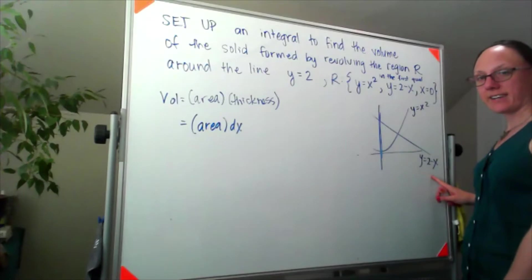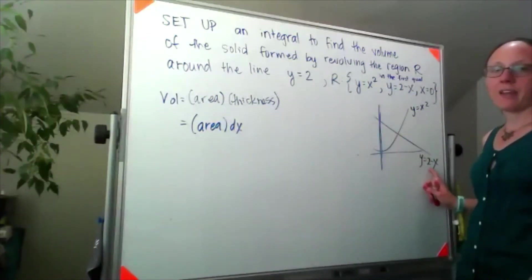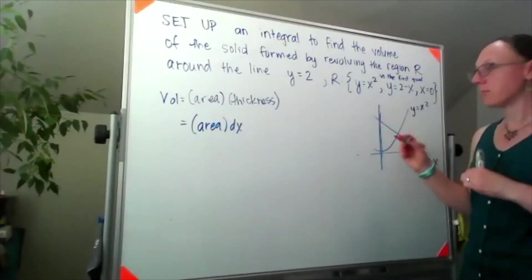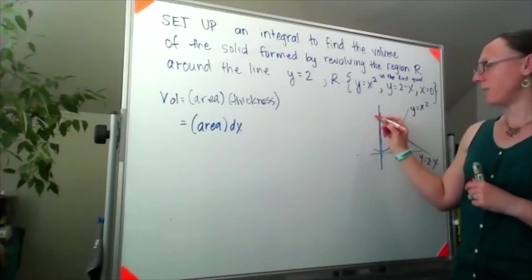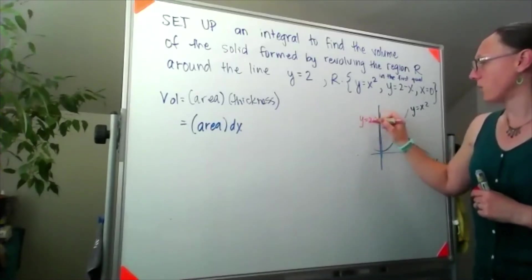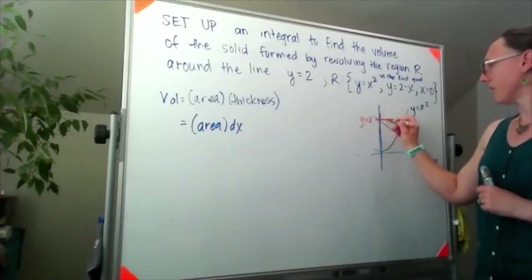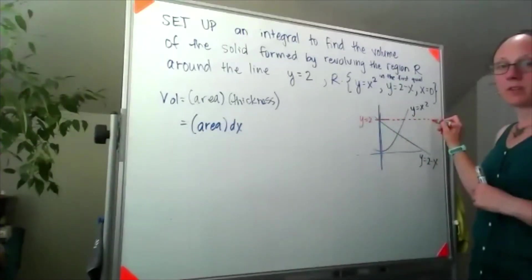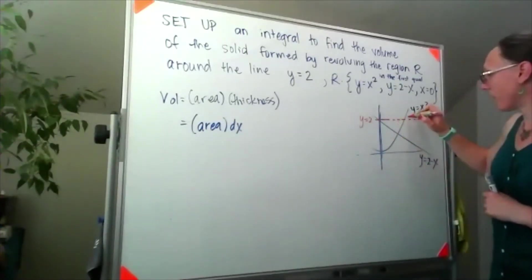Since y equals 2 minus x is the equation of our line and that 2 is our y-intercept, this right here must be y equals 2. So that's the line that we're spinning around.